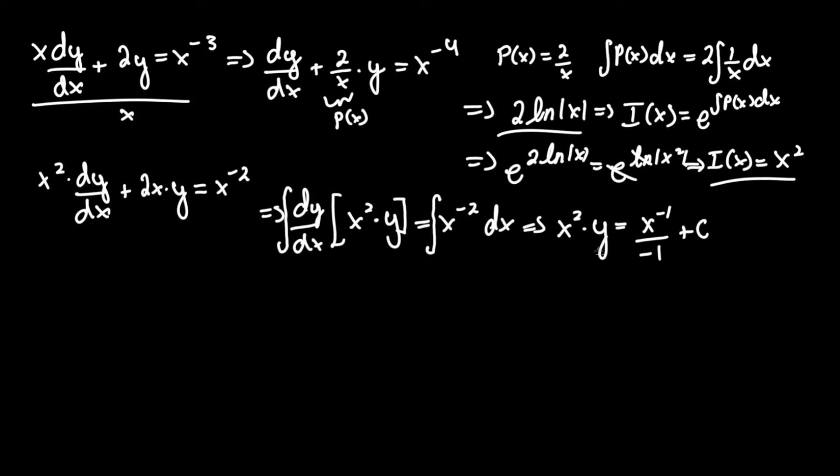Now isolate for y by dividing everything by x^2. That becomes y equals negative x^(-1)/x^2, which is -x^(-3), plus c*x^(-2).